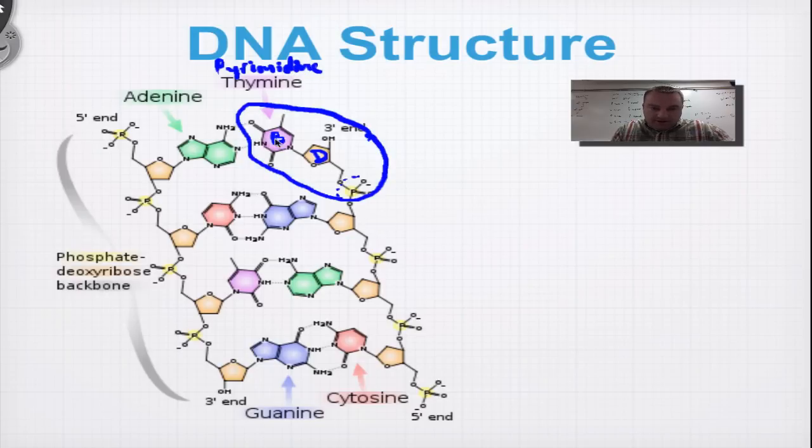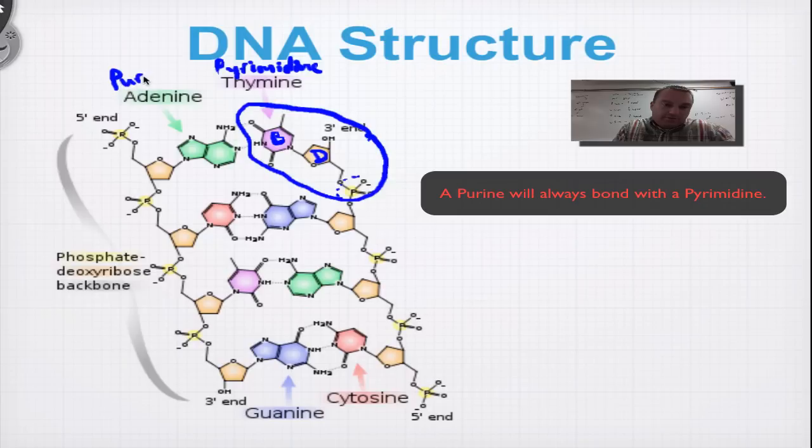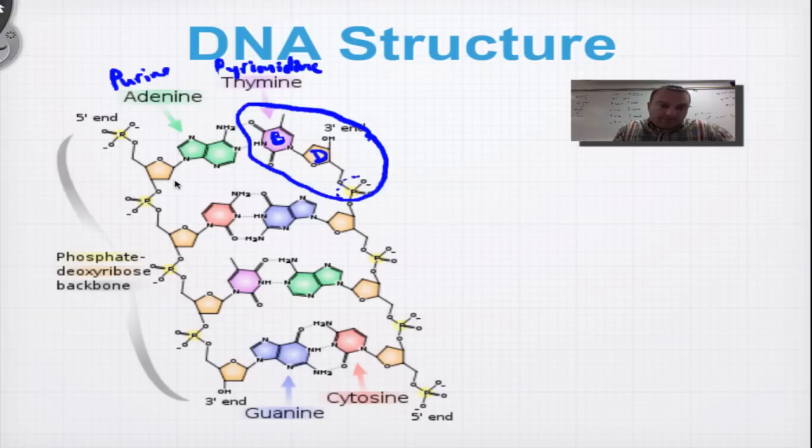Over here, you follow Chargaff's rules. A pairs with T. So here's adenine. Adenine is a double ring. So it's a purine. Once again, that's from the previous episode. And you'll notice you see these little dots right in here. These dots represent hydrogen bonds. So one, two, three.